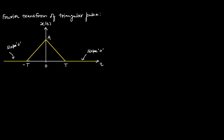The perpendicular is A and the base is T, so the slope is plus A by T. From 0 to T, the slope is negative because the value of x(t) is decreasing, and the slope is negative A by T, since the perpendicular is A and the base is T.